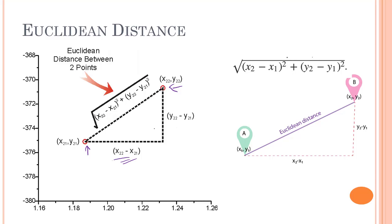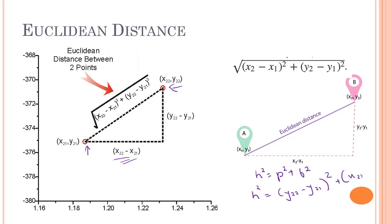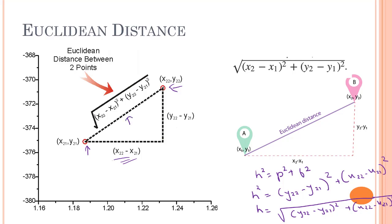We know from the fact that h squared equals p squared plus b squared. So this is the hypotenuse for the right angle triangle — this is the hypotenuse, this is the perpendicular, and this is the base. So h squared equals p squared plus b squared. Our perpendicular is y2 minus y1 squared, and our base is x2 minus x1 squared. Since we have h squared, if we transfer h to the right-hand side we get a square root, giving us the hypotenuse — which is the distance between the two points.